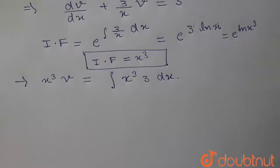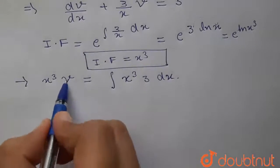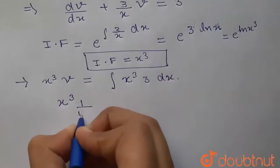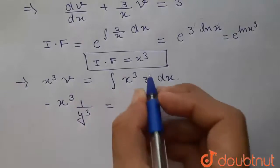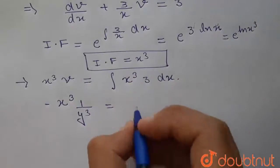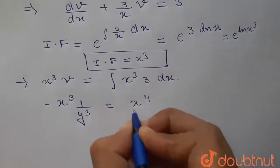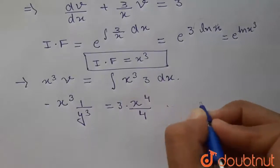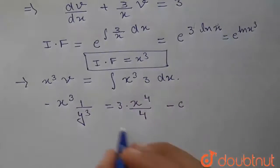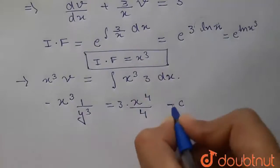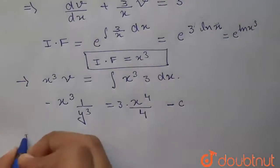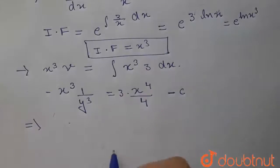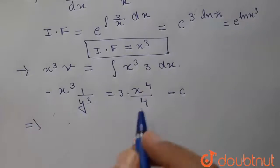Now we substitute back the value of v. Since v equals minus 1 upon y cubed, we write minus x cubed upon y cubed equals the integration, which gives x to the power 4 by 4 times 3, plus an integration constant, which we write as minus c.